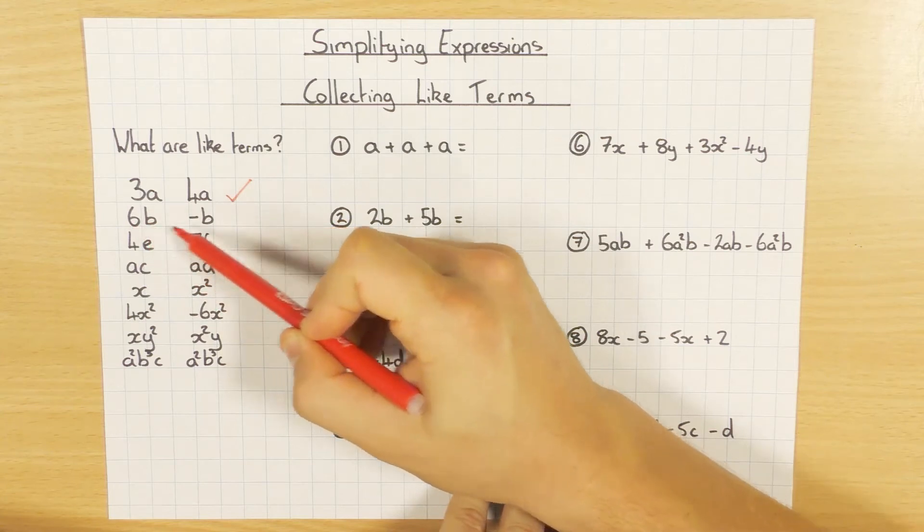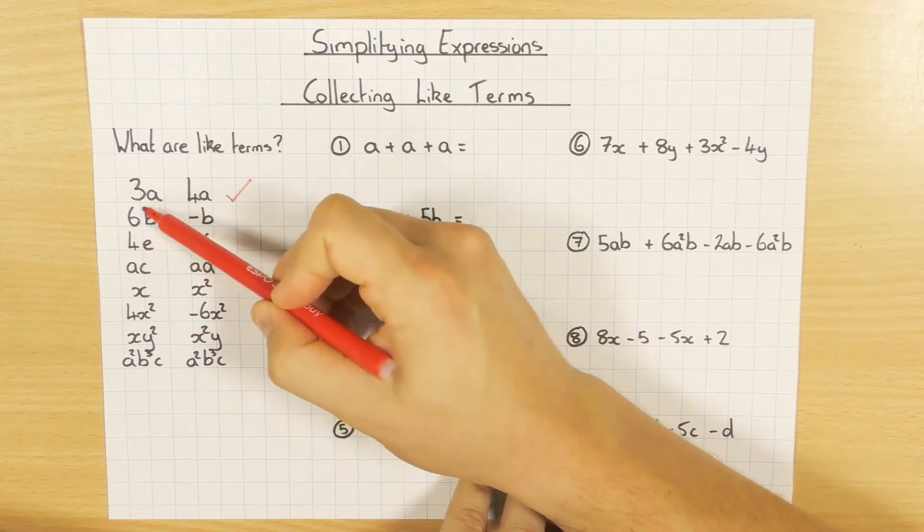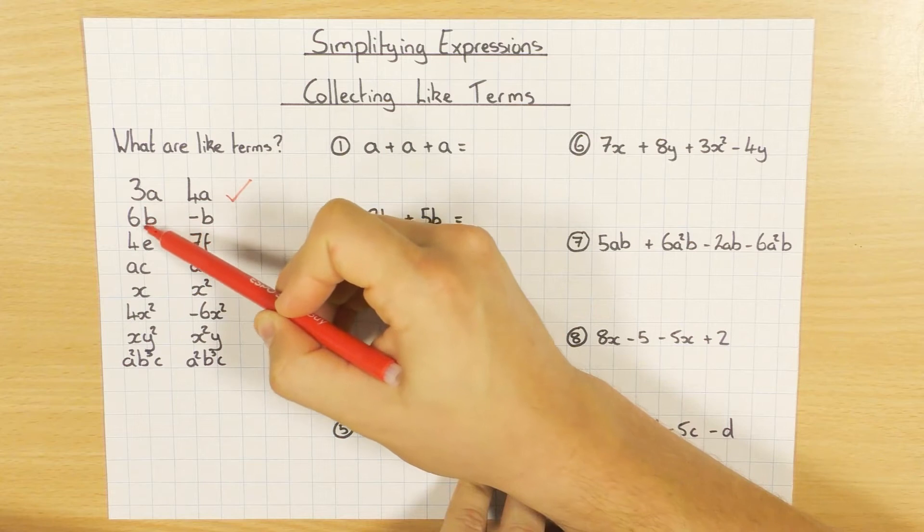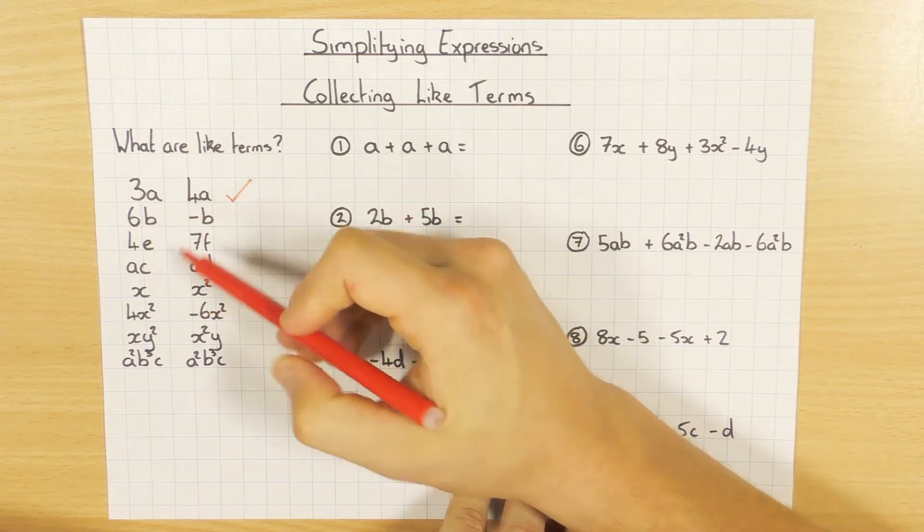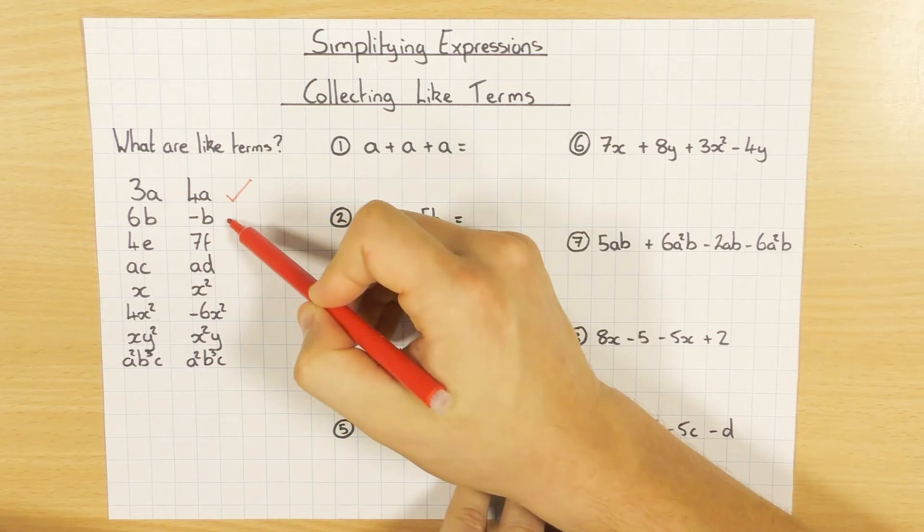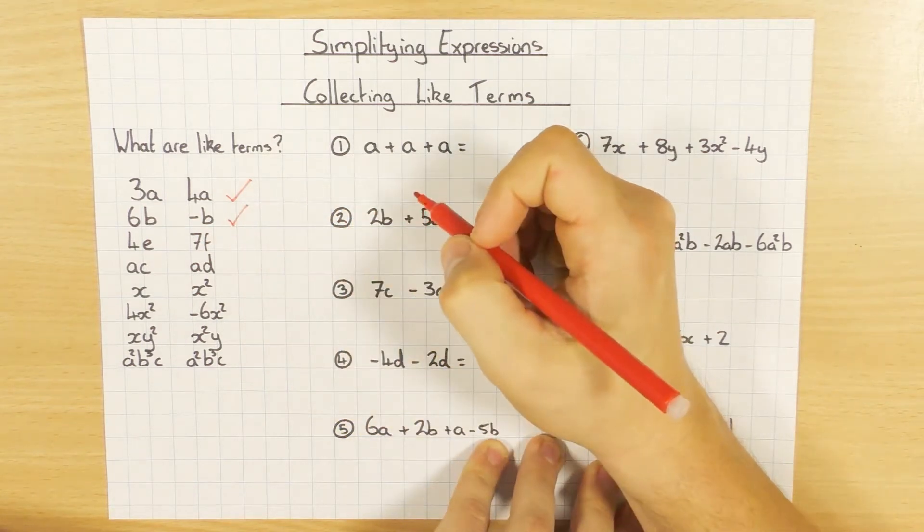This one here, I've got a 6B and a minus B. I'm only going to focus on the letter or the variable, which is B and B. Don't care about the minus, don't care about the 6. The Bs are the same. So these are like terms.